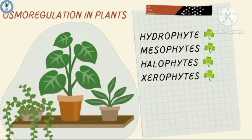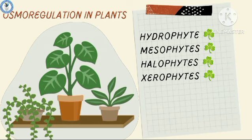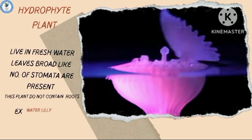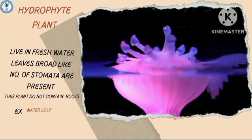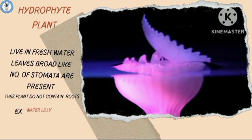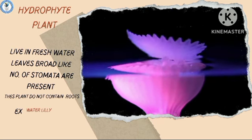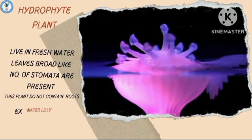First are hydrophyte plants. Hydrophyte plants live in fresh water. Leaves are broad-like, and a number of stomata are present. The plant does not contain roots. Example: water lily.